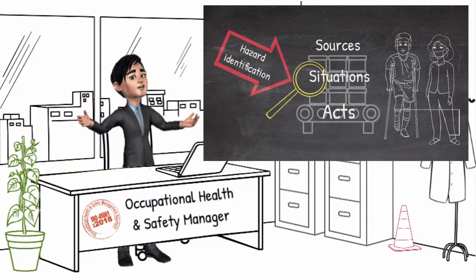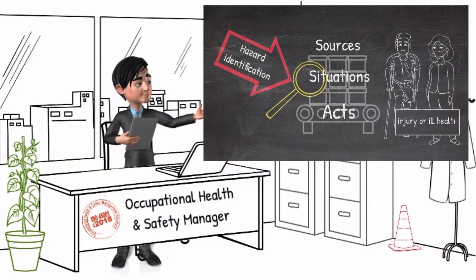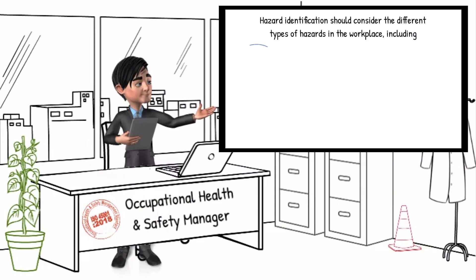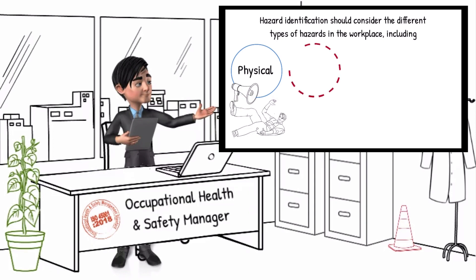Now we will look at the types of hazards in the workplace. Hazard identification should consider the different types of hazards, including physical — for example, slips, trips and falls, entanglement, noise, vibration, and harmful energy sources.